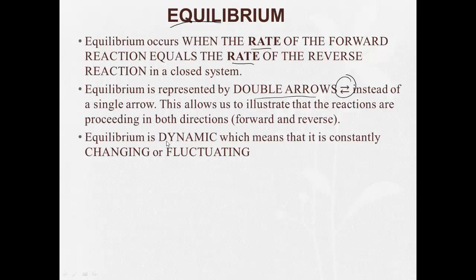Now, Equilibrium is what's called dynamic, which means that it's constantly changing or fluctuating. We can affect it. The forward reaction is constantly happening, and the reverse reaction is constantly happening.